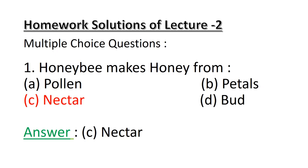Question number 1 was a multiple choice type question. It is given: Honeybees make honey from — Option a: pollen, Option b: petals, Option c: nectar, Option d: bud.